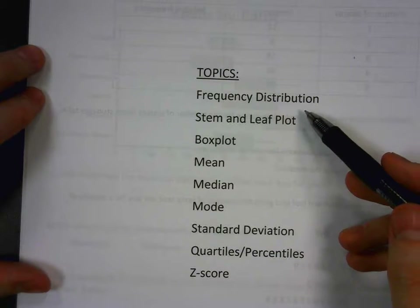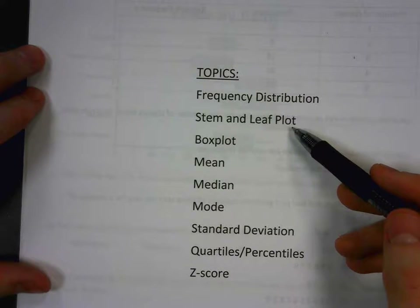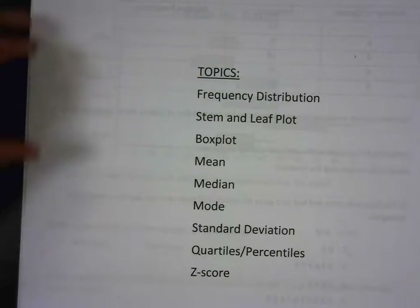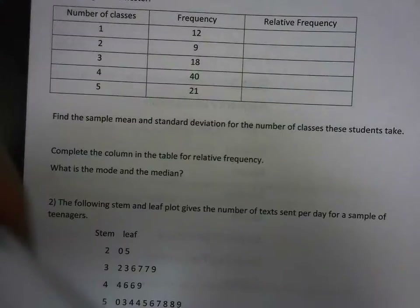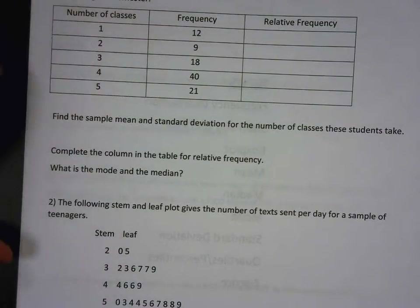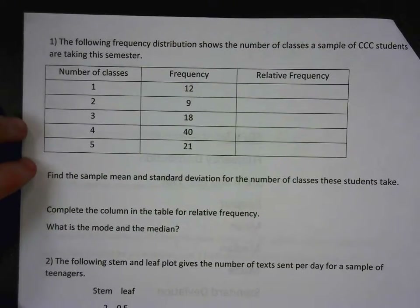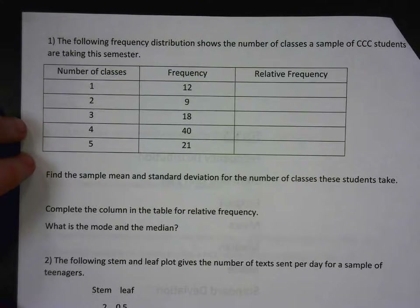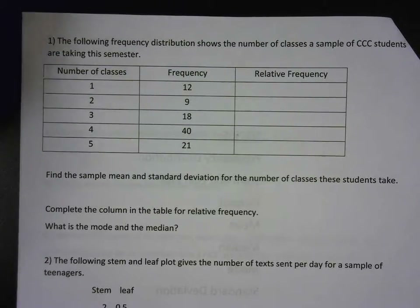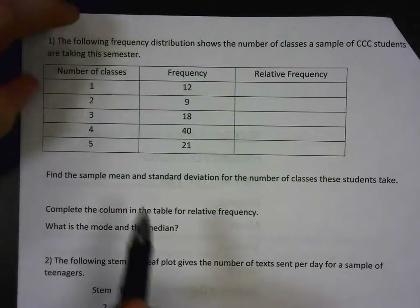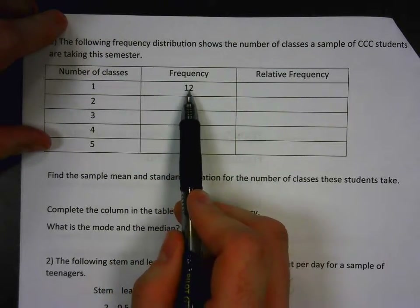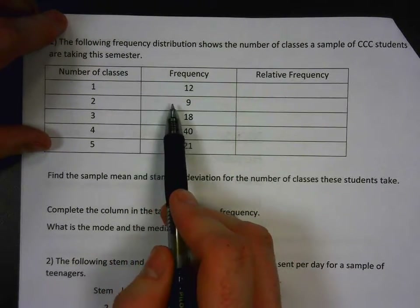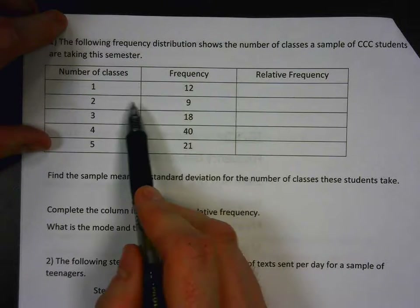The example: number one gives you the number of classes a sample of CCC students are taking this semester. In the sample, there are 12 students that took one class, nine students that took two classes, and so on. We want to find the sample mean and standard deviation for the number of classes these students take.